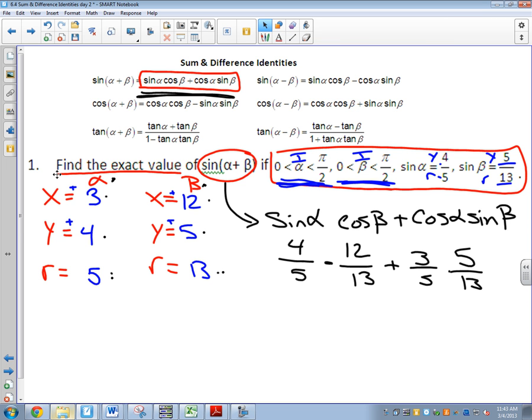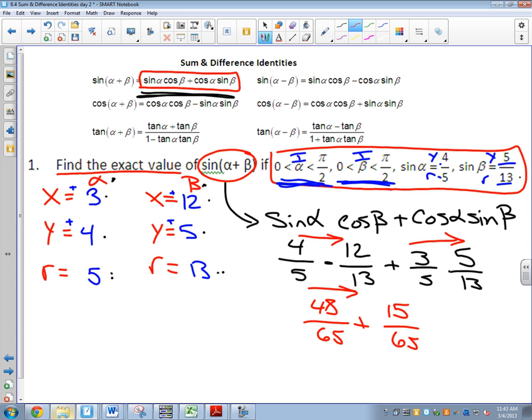To do the problem, all I need to do is multiply. Four times twelve is forty-eight over sixty-five, plus fifteen over sixty-five. Finally, I add forty-eight plus fifteen is sixty-three over sixty-five.